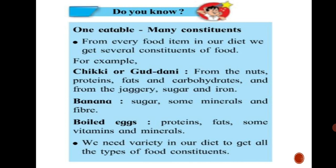Banana gives us sugar, some minerals, and fiber. Boiled eggs contain proteins, fats, some vitamins, and minerals. So, we need variety in our diet to get all the types of food constituents.